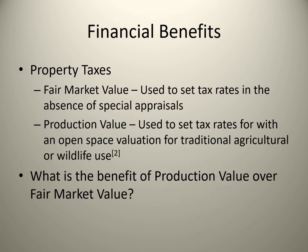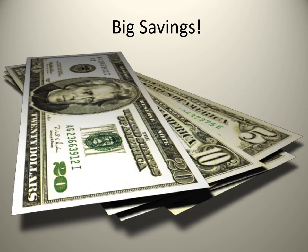Property taxes in Texas are set two ways: fair market value and production value. Fair market value is the price your property would sell for under normal market conditions — an example would be residential homes — where production value is an estimate of the land's capacity to produce agricultural products. Being taxed off of production value versus fair market value means big savings for you.